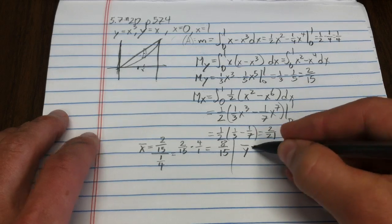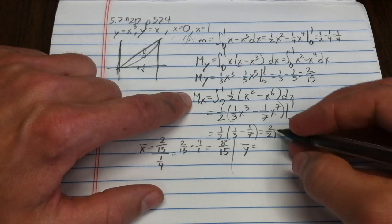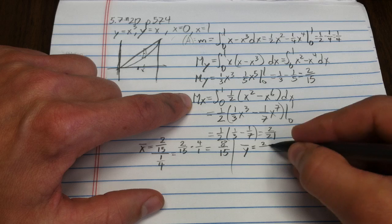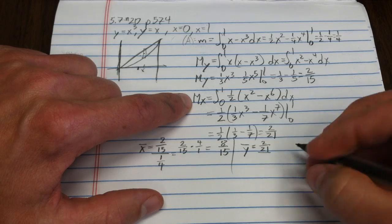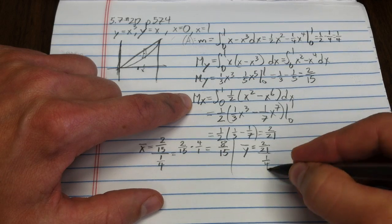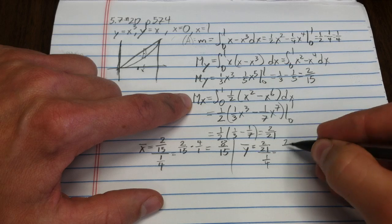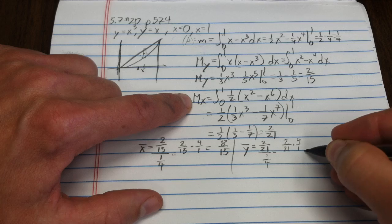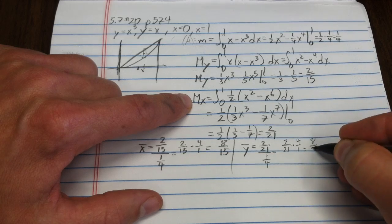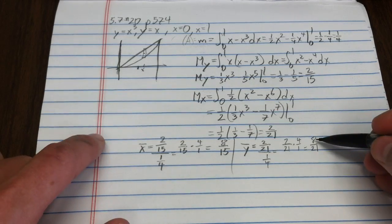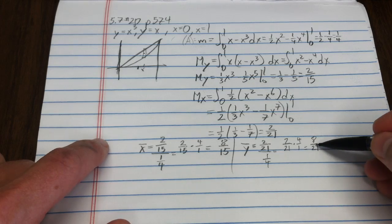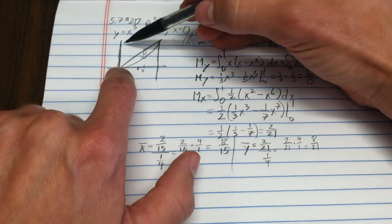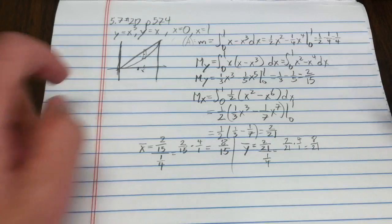And then y-bar equals the moment about the x-axis. That's two twenty-firsts divided by one-fourth. Invert and multiply: two twenty-firsts times four over one, which is eight twenty-firsts. That's a little less than ten and a half twenty-firsts, so the center of mass in the y-direction is a little below halfway.